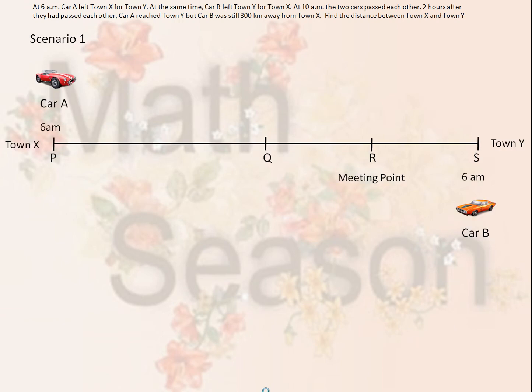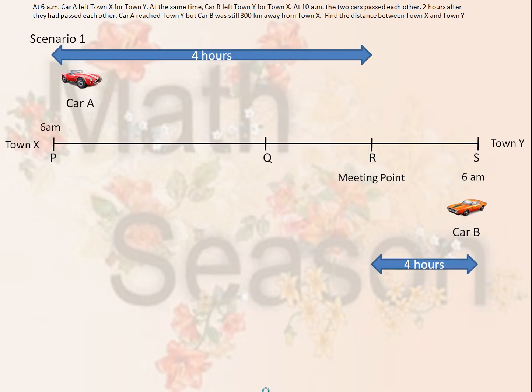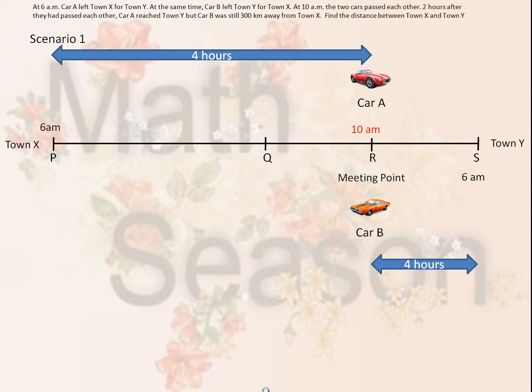Scenario 1: In 4 hours, car A had reached the meeting point at 10 a.m. after leaving at 6 a.m. from town X. Meanwhile, car B left town Y at 6 a.m. and also reached the meeting point at 10 a.m., after 4 hours.